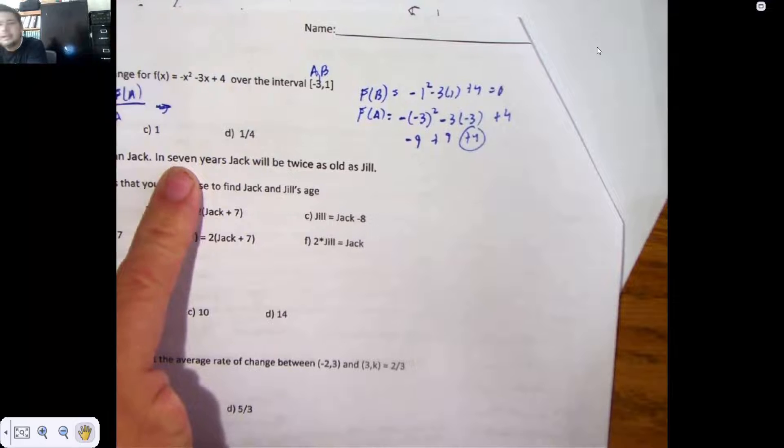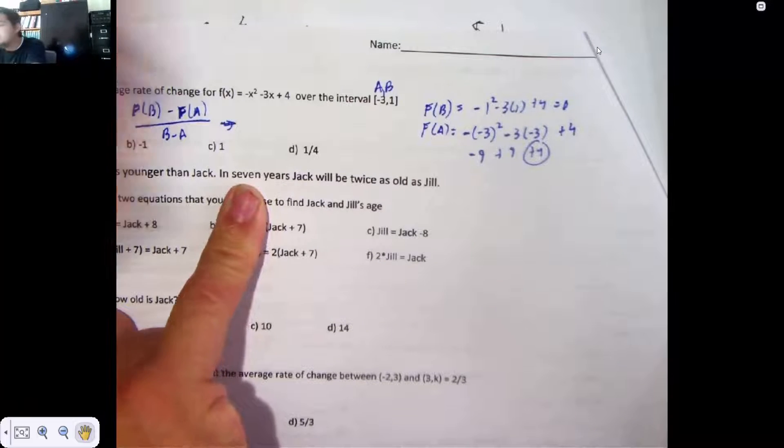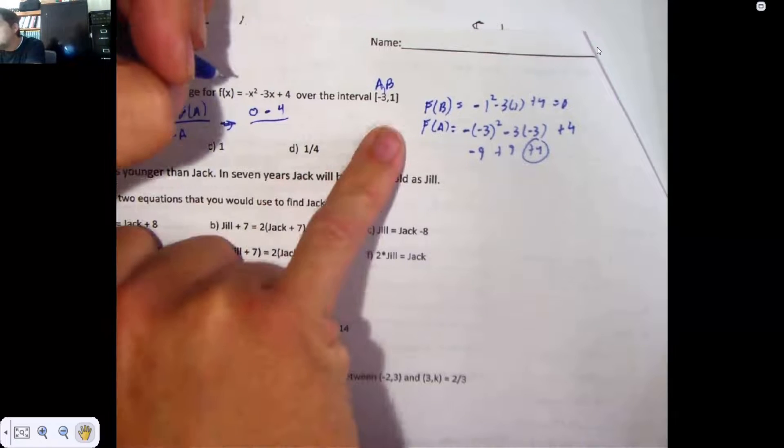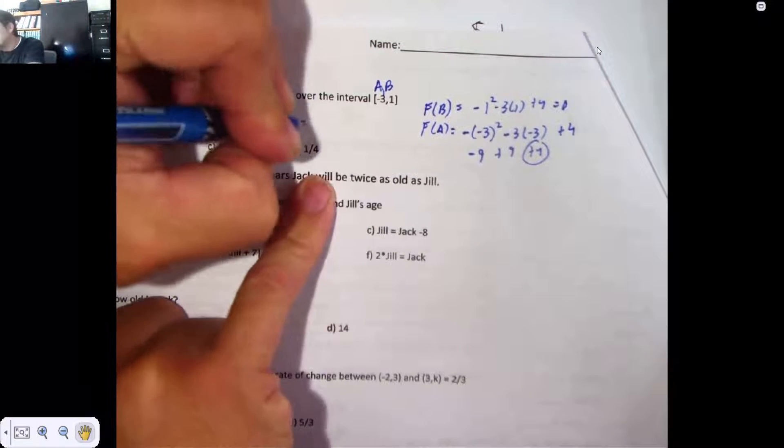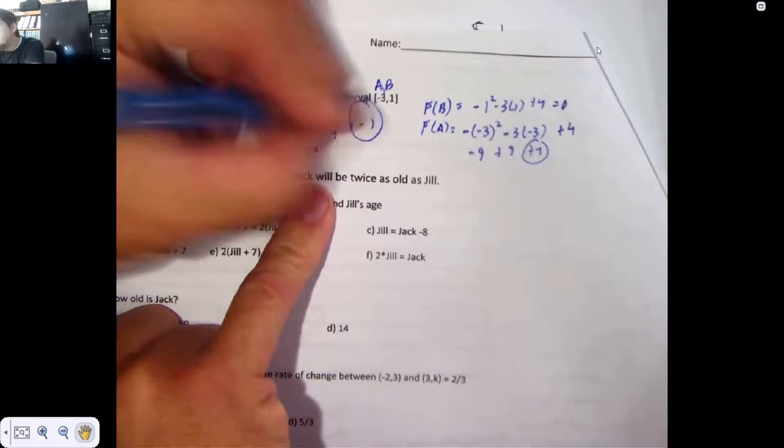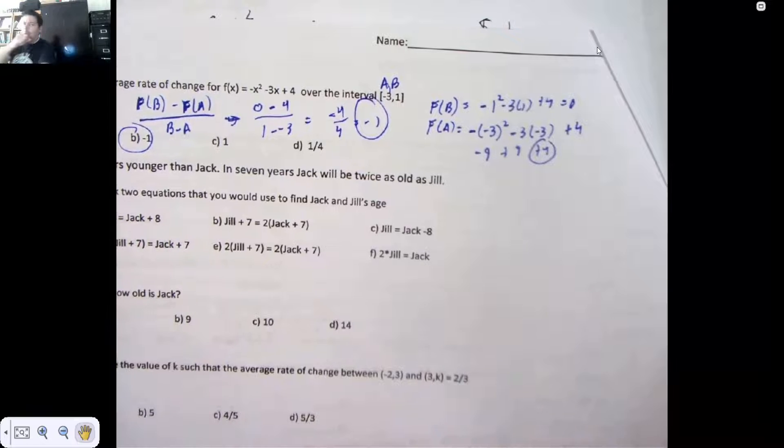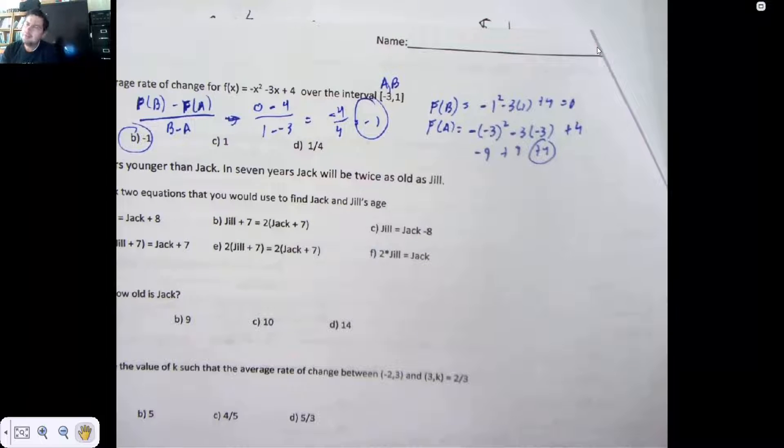So plugging back into f(B) - f(A), I know that f(B) is 0. I'm going to take away f(A), which was 4. I'm going to be sitting over B - A, 1, take away a -3. This becomes -4 over 4, which is -1. I don't want to answer the A to that one. I'm not really sure. I think that just plugged in f(B), and they saw a 0, and they were happy with it. There's a little bit more to it than that.